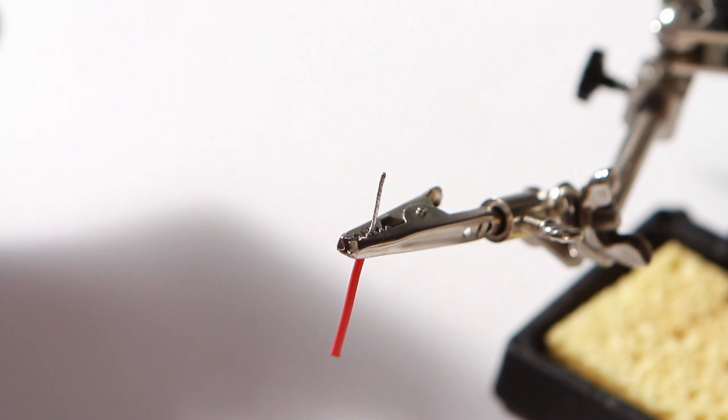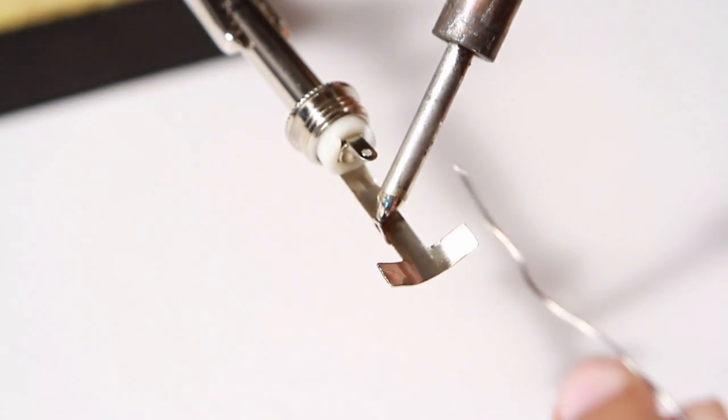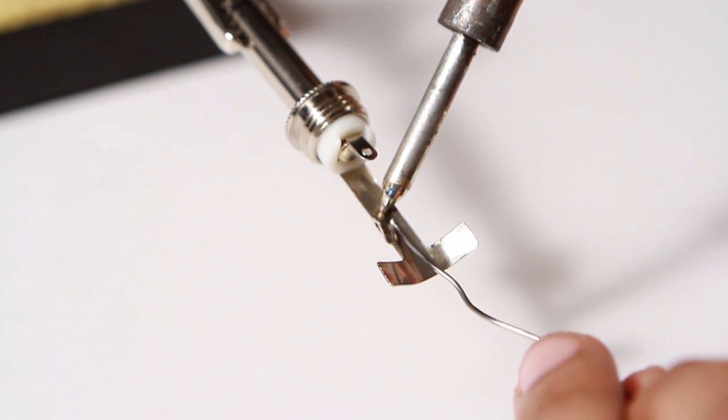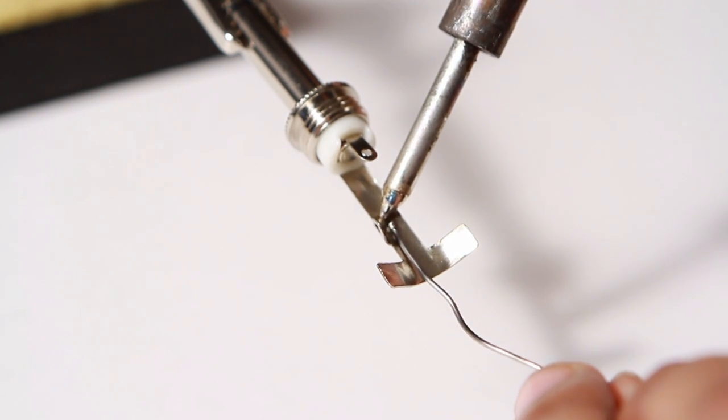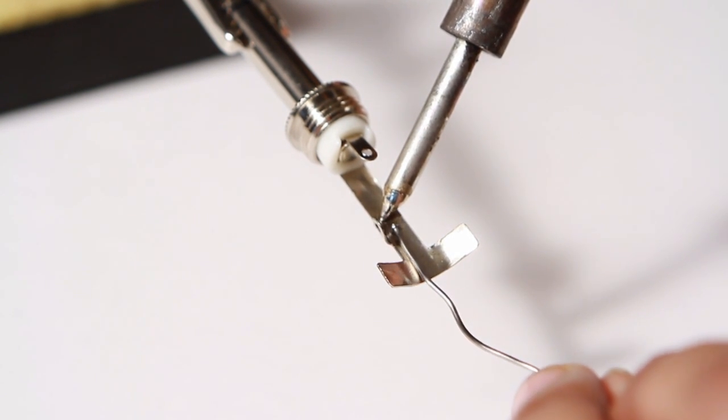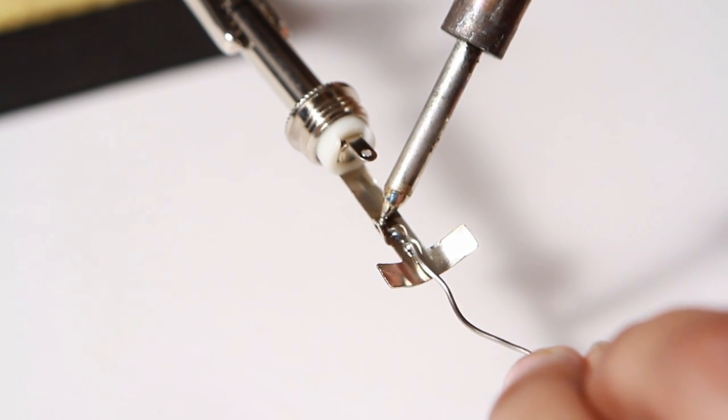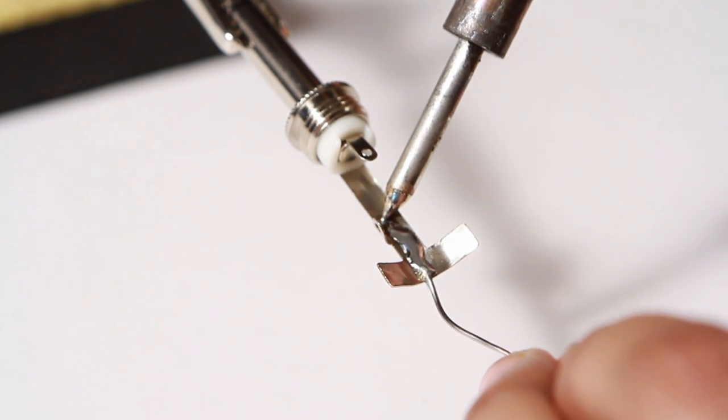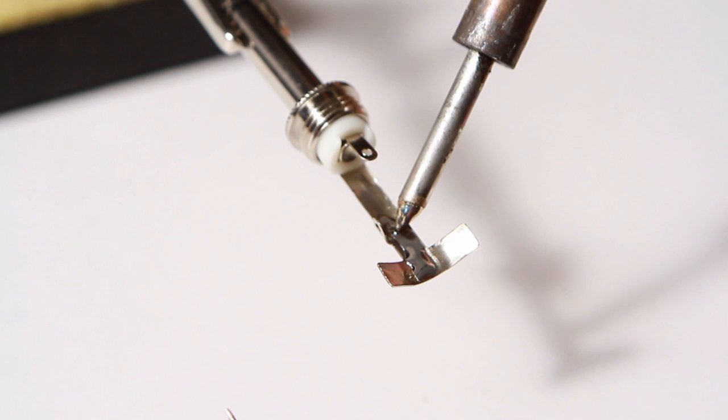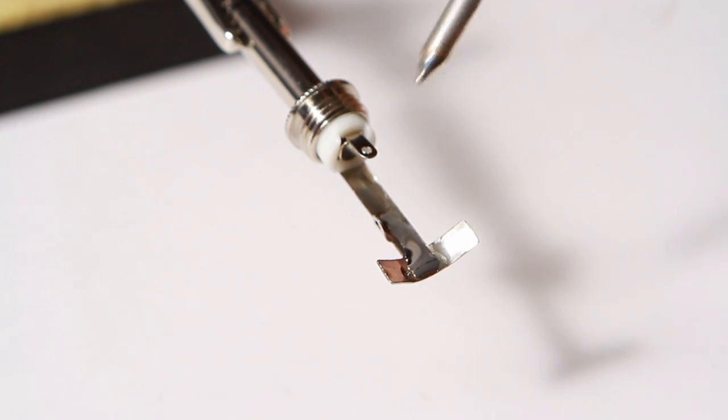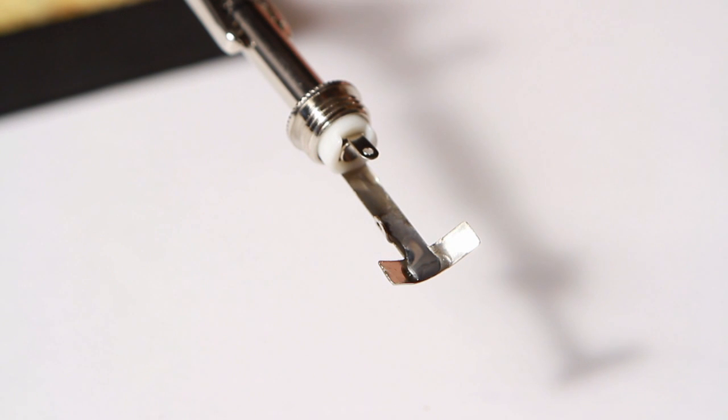Now you're ready to solder this wire to anything, like other wires or a circuit board. Some connections call for something known as welling. This means you're going to heat up the surface you wish to solder to and add a pool of solder. Then when you're adding whatever you wish to connect, reheat the pool and create a solid connection.